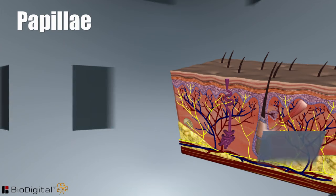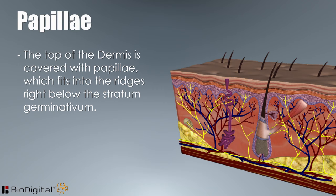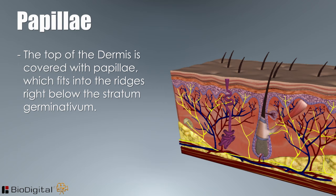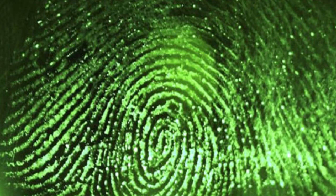Papilla. The top of the dermis is covered with papilla, which fits into the ridges right below the stratum germinativum. The papilla are responsible for creating fingerprints and footprints. Like a snowflake, no one fingerprint is created twice, not even in twins.